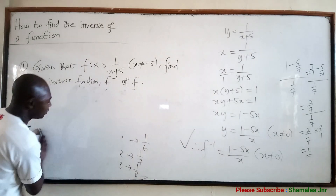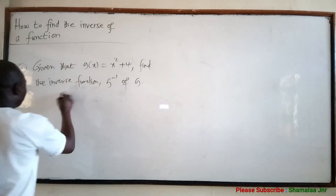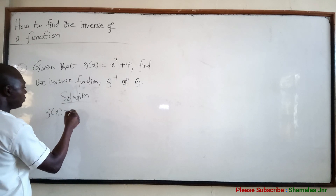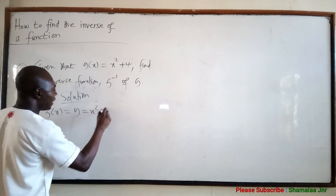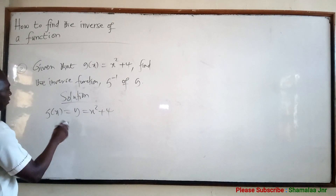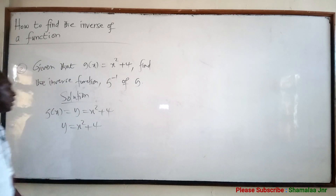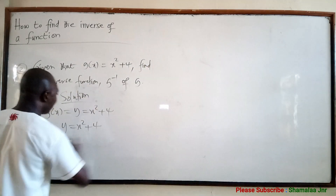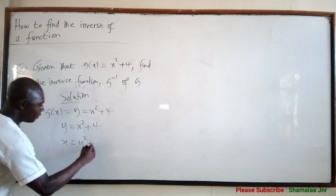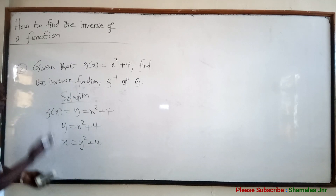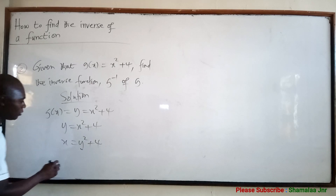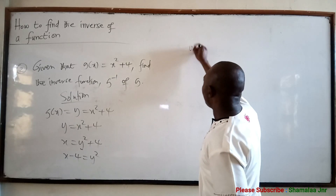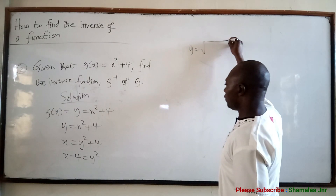Let's quickly look at the last question and bring this lecture to an end. Solution: I have been given G of x is equal to, which is the same as y equals x squared plus 4. To find the inverse, the first thing you do is interchange the x and y values, giving x equals y squared plus 4. Then make y the subject: x minus 4 equals y squared, so y equals the square root of x minus 4.